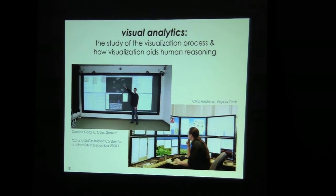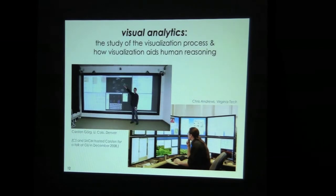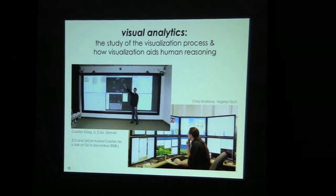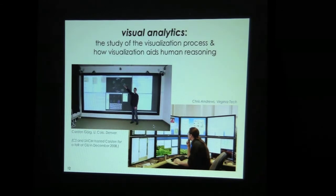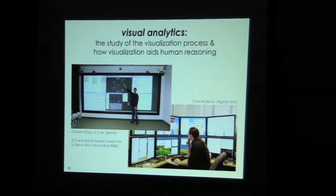Visual analytics tries to bind these things together — we're studying the visualization process and how it aids human reasoning. Here are two up-and-comers in visual analytics. Karsten Goerg, at Georgia Tech with John Stasko and now at the University of Colorado Denver, shows off their Jigsaw environment for intelligence analysis or police reports, digging apart relationships between people, places, resources, and the like. This carries over to the Republic of Letters data quite directly — the dimensions of the data and the analysis tasks are largely the same.